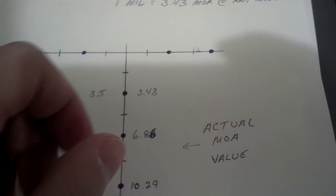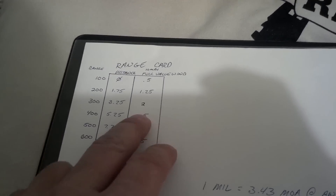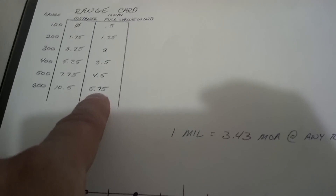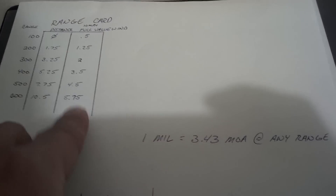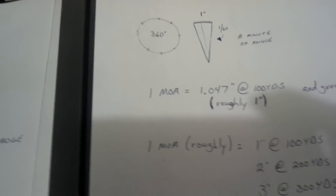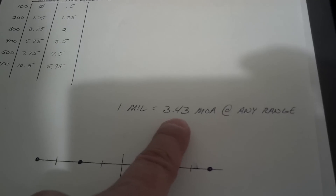On the other column of your ballistics card, you're going to have windage — this is your 10-mile-an-hour full-value wind. That's something I'll probably cover in another video. Basically, you figure out your predominant wind condition and use this dope as a basis to apply whatever your wind conditions actually are, using the 10-mile-an-hour full-value wind number as reference. The big numbers to remember are 1.047 inches at 100 yards, or roughly 1 inch, and a mil is 3.43 minutes of angle.